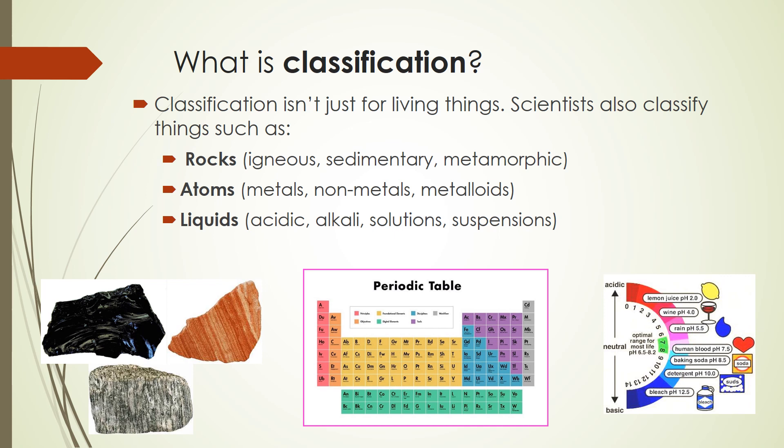Classification isn't just for living things. As you demonstrated in the first activity, you classified stationary items. Scientists also classify rocks — in Year 8 Science you learn about igneous, sedimentary, and metamorphic rocks, which differ based on how they're formed. We classify atoms based on whether they're a metal, nonmetal, or metalloid. We can classify liquids as acids, bases, solutions, or suspensions. Scientists use classification in a range of ways, not just for living things.